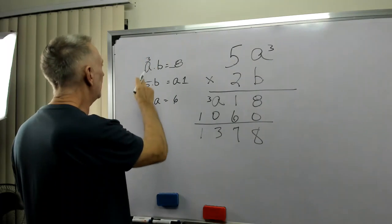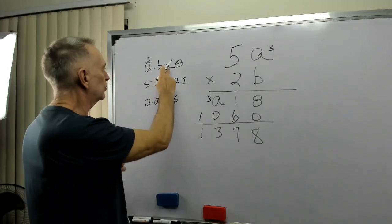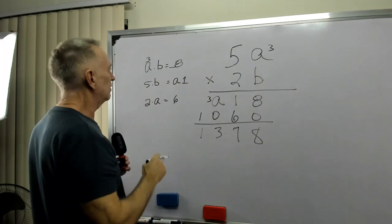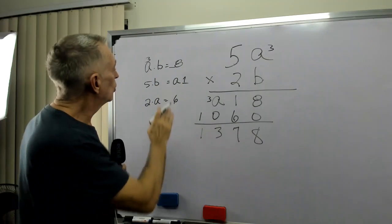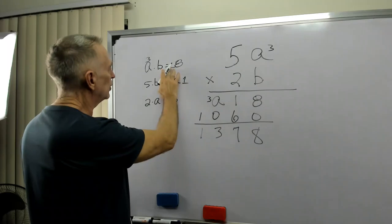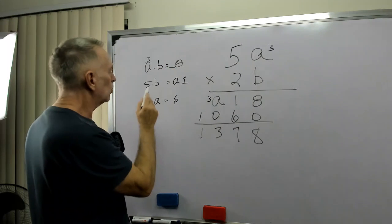So, now we have 3 times B equals something 8. Now, do we think there's another digit? What's the multiples of 3?